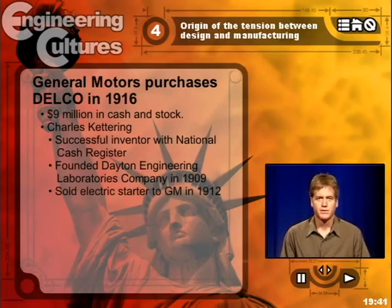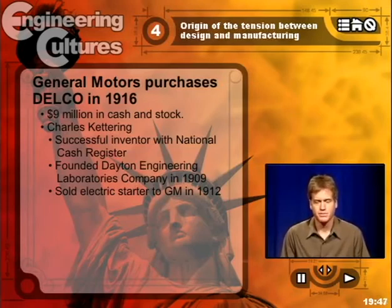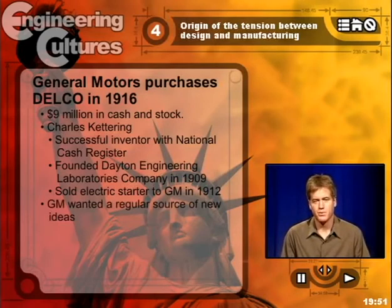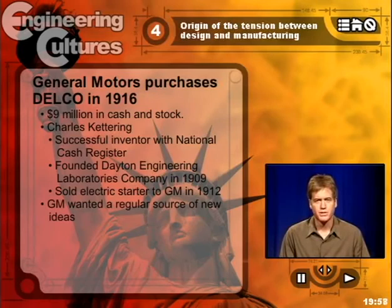This new company, Delco, and its leader Charles Kettering, was establishing a productive relationship with General Motors. From the point of view of GM — Durant and others in the leadership — this new company was a source of new ideas. This was a source of light bulbs.